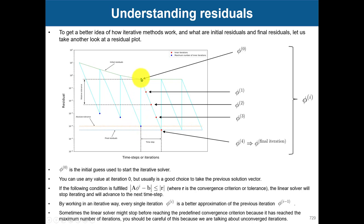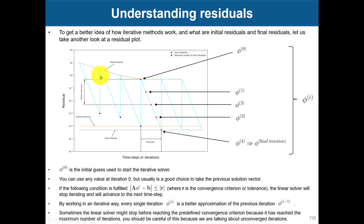What is happening is: you start with an initial guess, iterate, and when you reach the tolerance you stop and move to the next time step. In the next time step, your initial guess is your previous time step's solution, you iterate again, reach the tolerance, and move on. Usually during the initial iterations you will not reach your final tolerance — that is normal behavior, because we know we are far from the final solution. But after a few iterations you should reach that final tolerance.